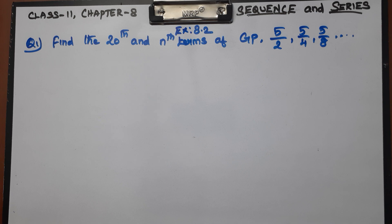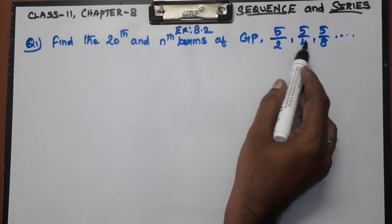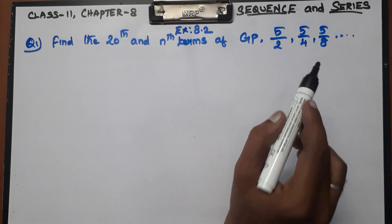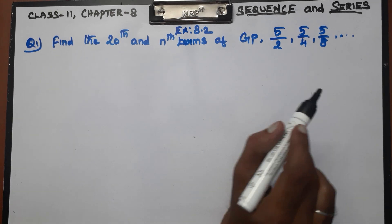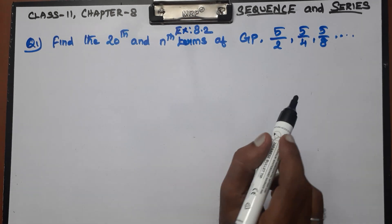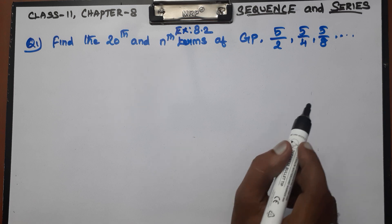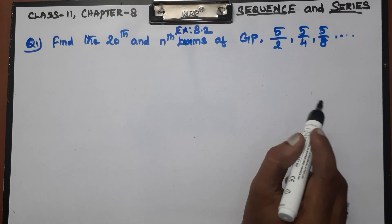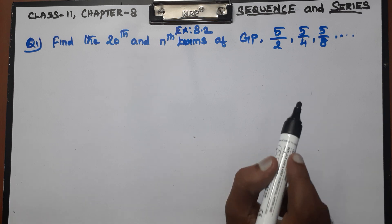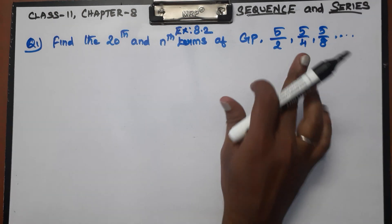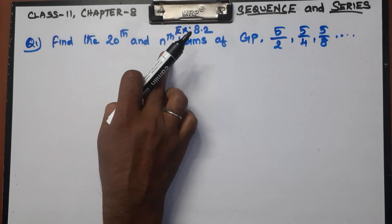In GP, the second term minus first term gives you 2i. If you write GP, then you write the second term and find the ratio. That is what GP means.